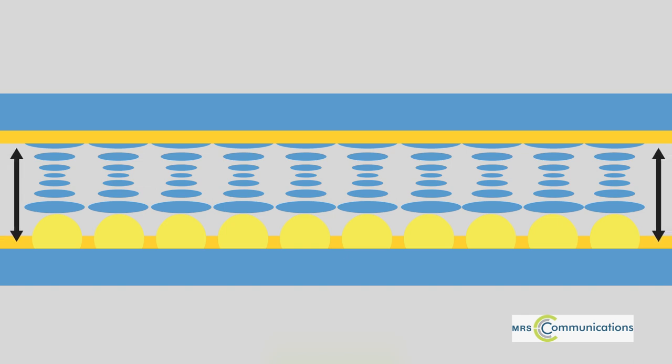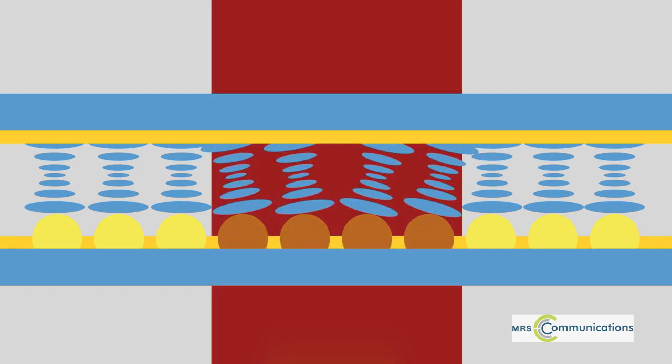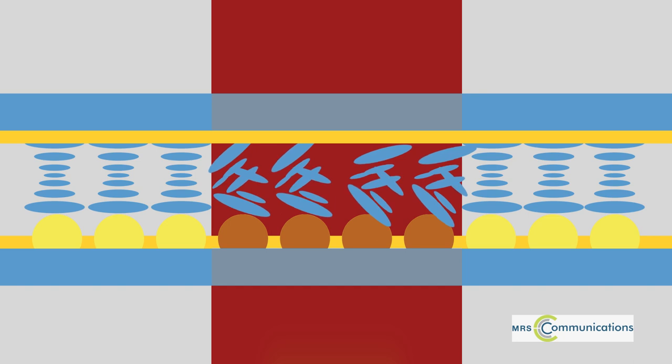The periodicity of the twisted structure dictates the natural color of the thin film. Adding heat causes the molecules to untwist and thus the film to lose its color. This transition is what makes color changes in thermometer strips and mood rings possible.